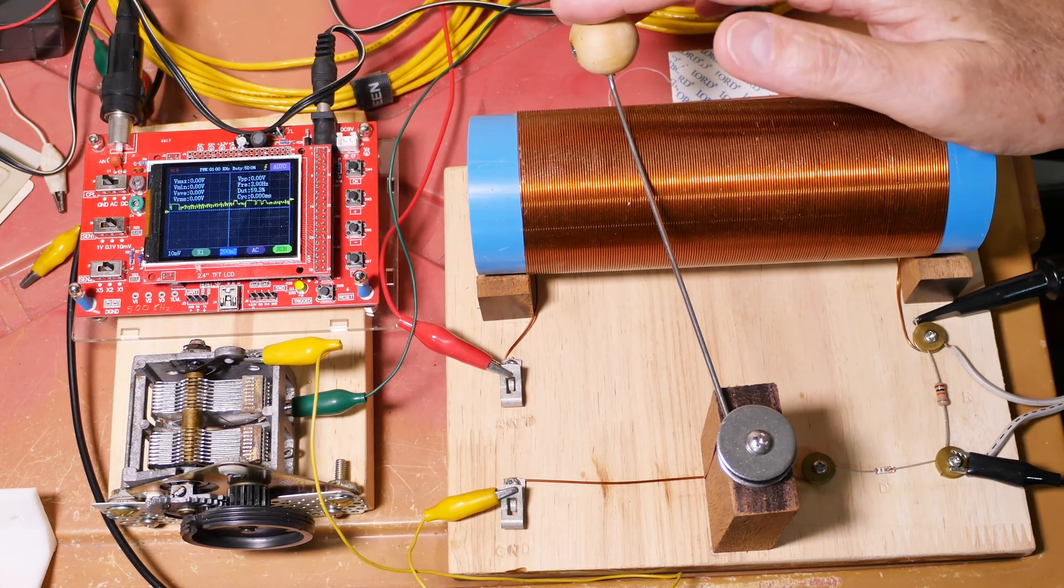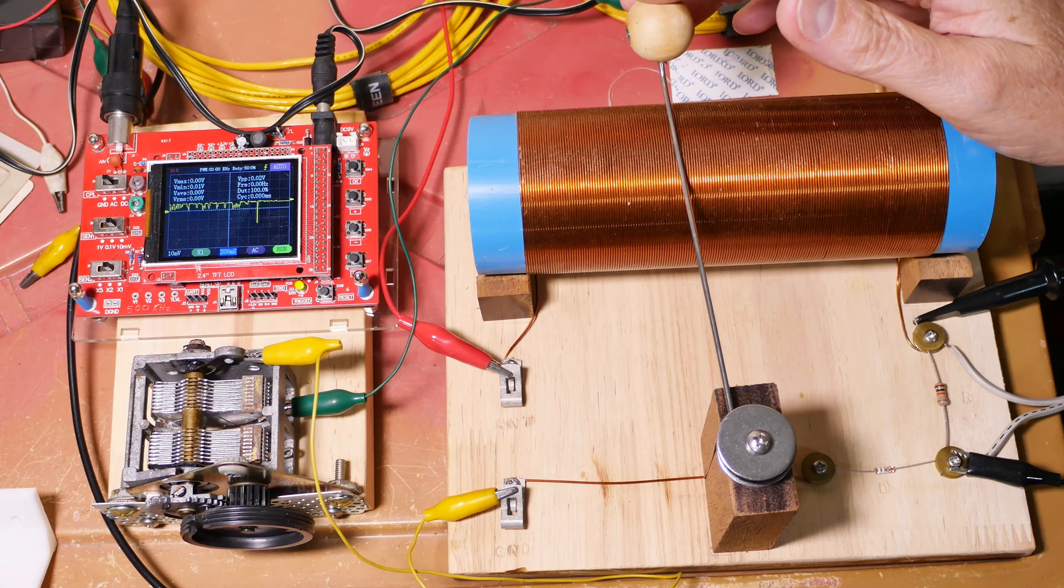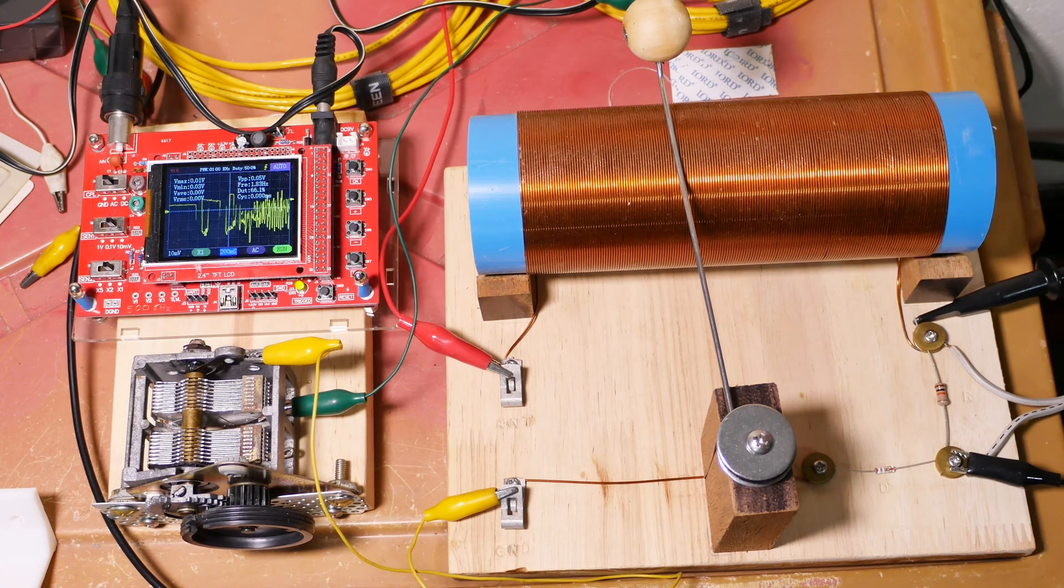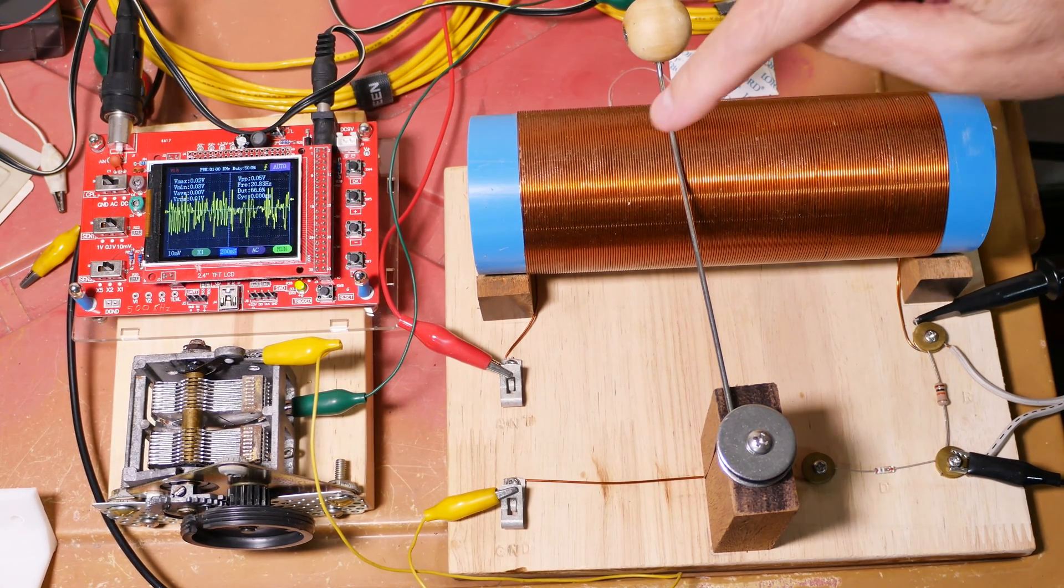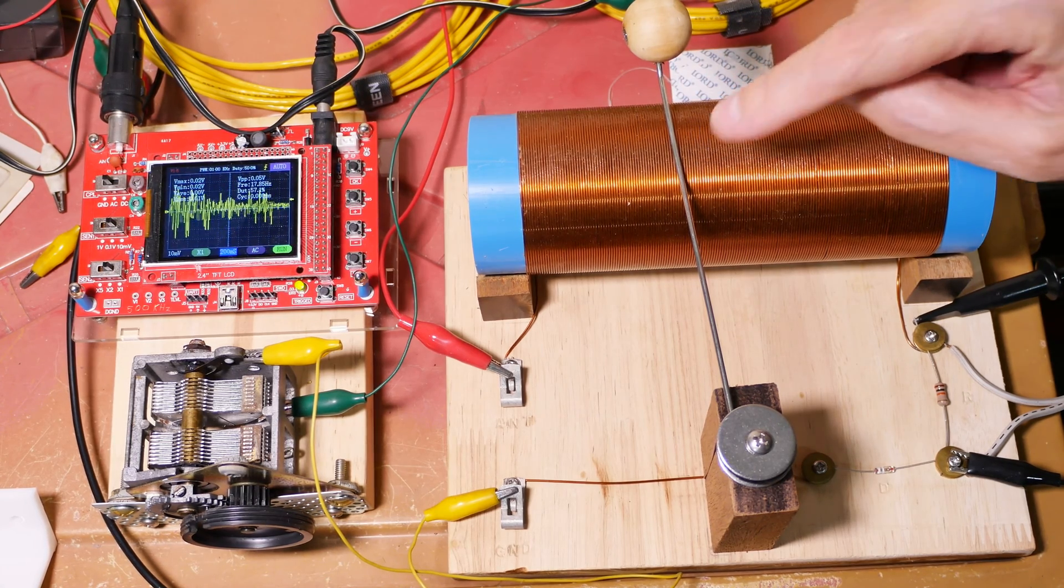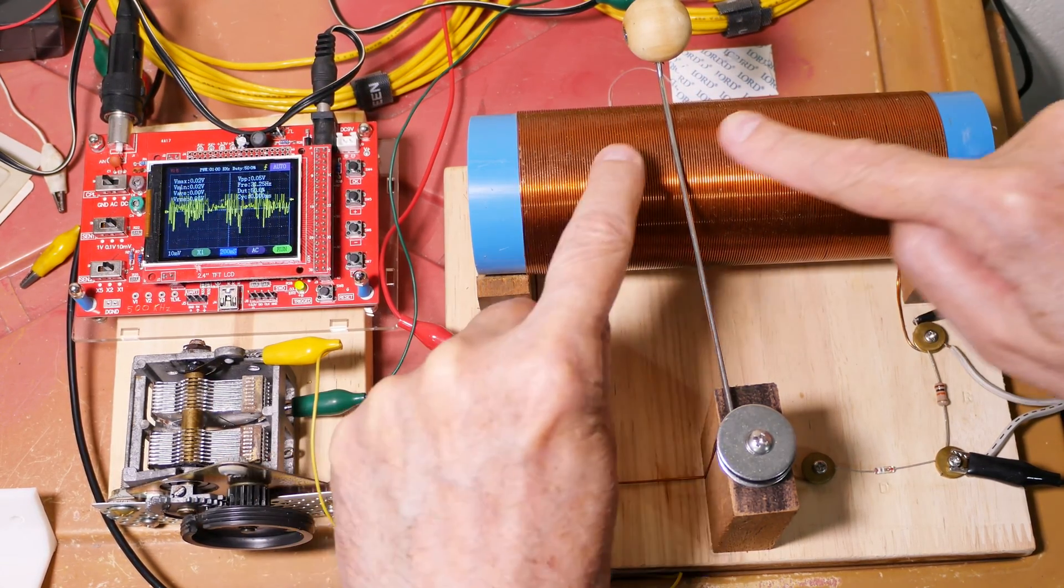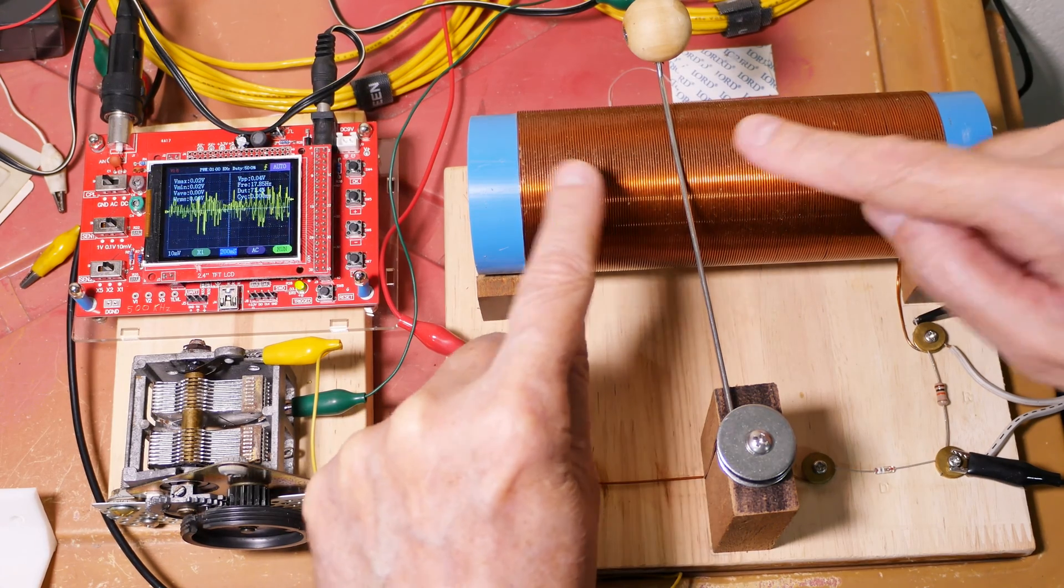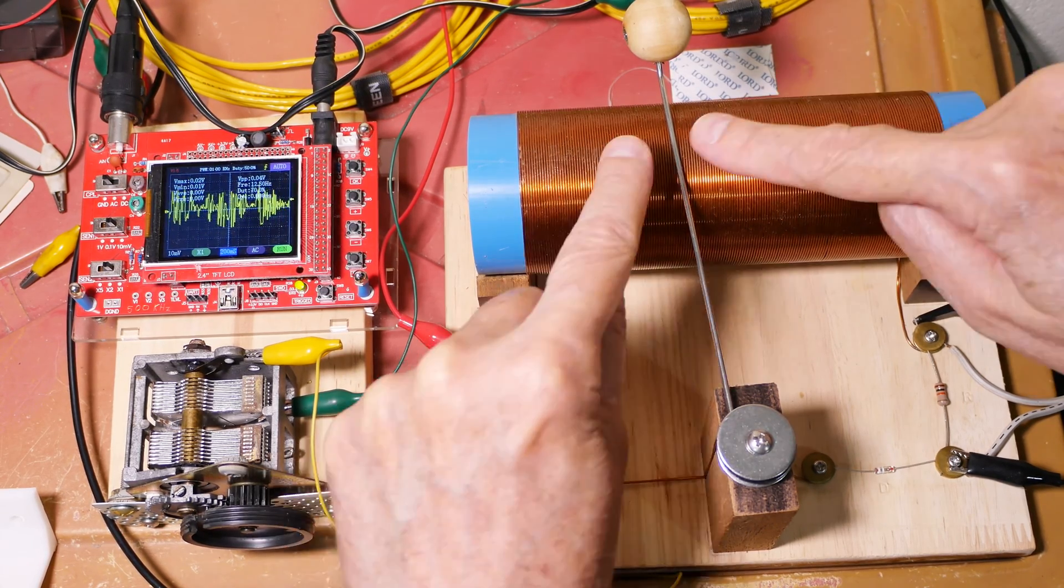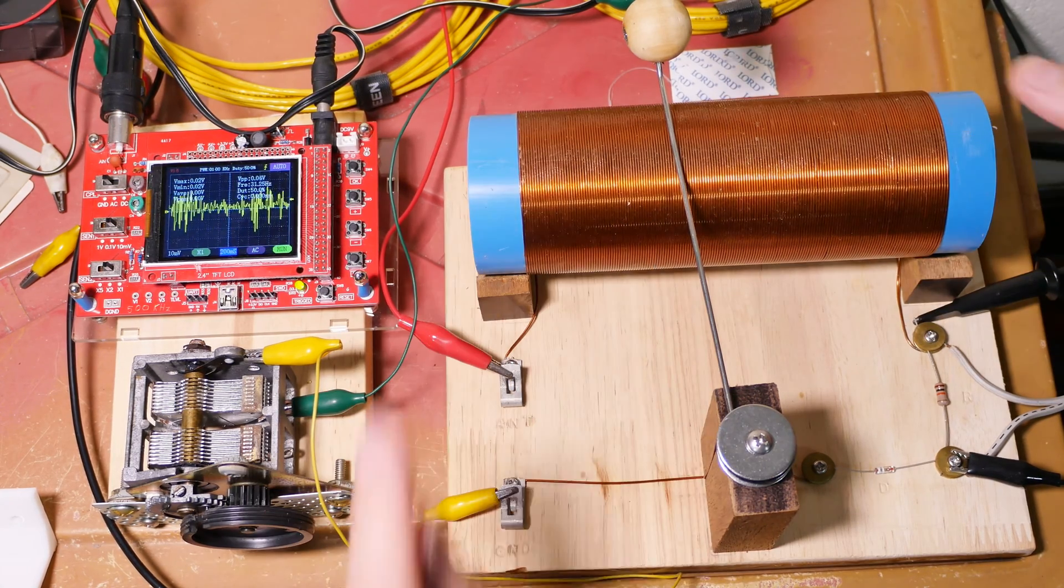But already I'm getting better selectivity. There we go. So you notice I had to move the wiper to get it back to the noisy station. So what this capacitor is going to do is it's going to narrow the range in which I can pick up that loud station. In other words, it's going to push that loud station into where it should be on the coil and not allow it to just bleed all over.